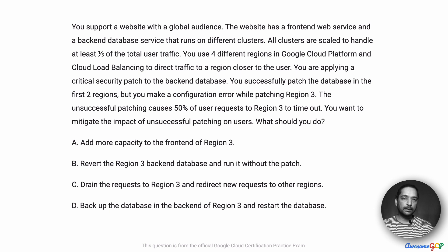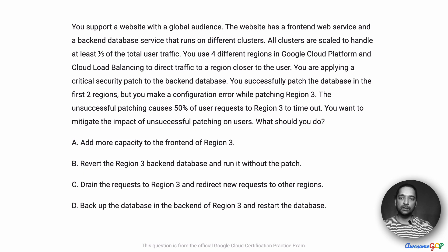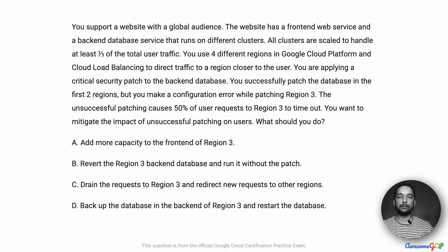You are applying a critical security patch to the back-end database. You successfully patch the database in the first two regions, but you make a configuration error while patching region 3. The unsuccessful patching causes 50% of user requests to region 3 to timeout. You want to mitigate the impact of unsuccessful patching on users. What should you do?